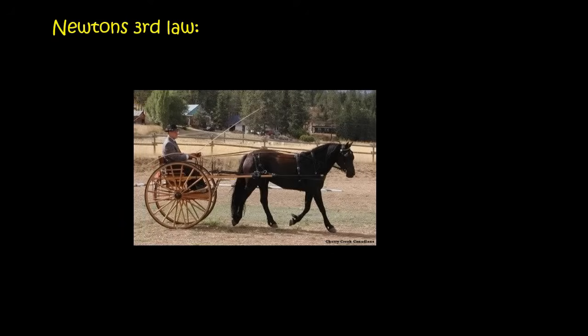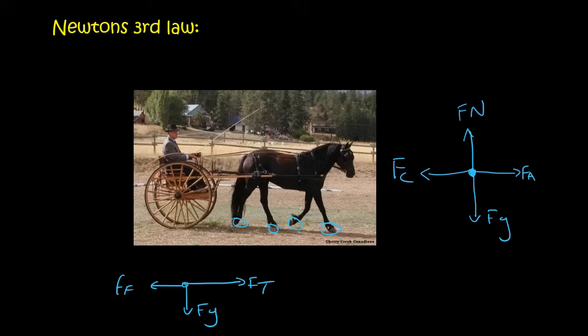Let's draw a free body diagram on the horse. The horse has its own applied force, a normal force keeping it up, and the force of gravity. Then there's a backwards force, which I'll call FC for the cart. Now for the free body diagram on the cart: it has gravity, friction at the wheels, a tension force due to the horse, and a normal force keeping the cart upwards. Let's assume this person doesn't exist.